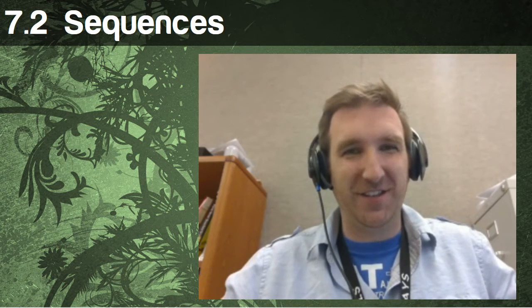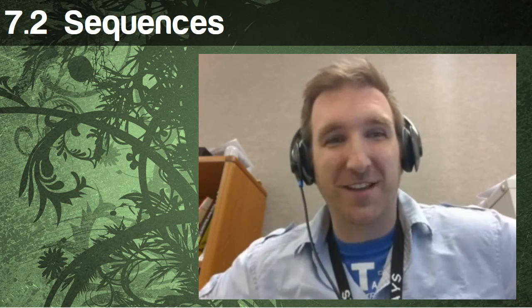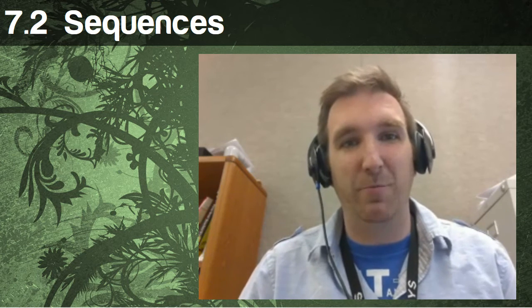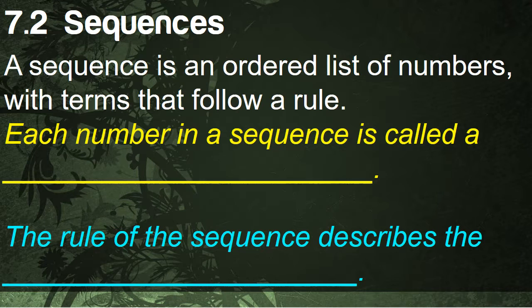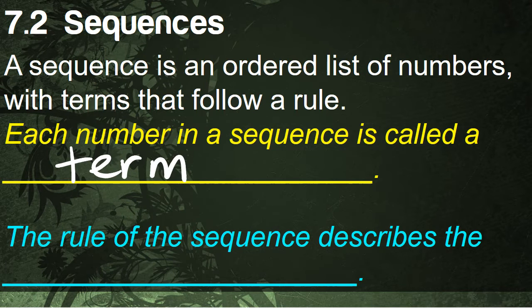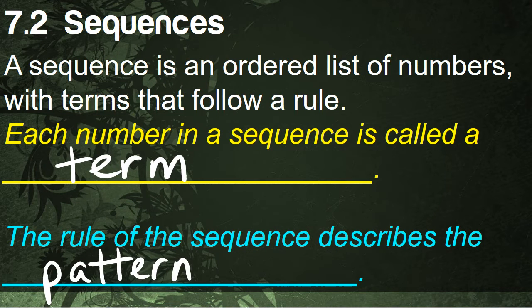What is up math superstars! In this edition of Mr. Peterson Presents, we are talking about objective 7.2 — sequences. A sequence is an ordered list of numbers with terms that follow a rule. Each number in the sequence is called a term, and the rule is the pattern that we're going to be seeing.